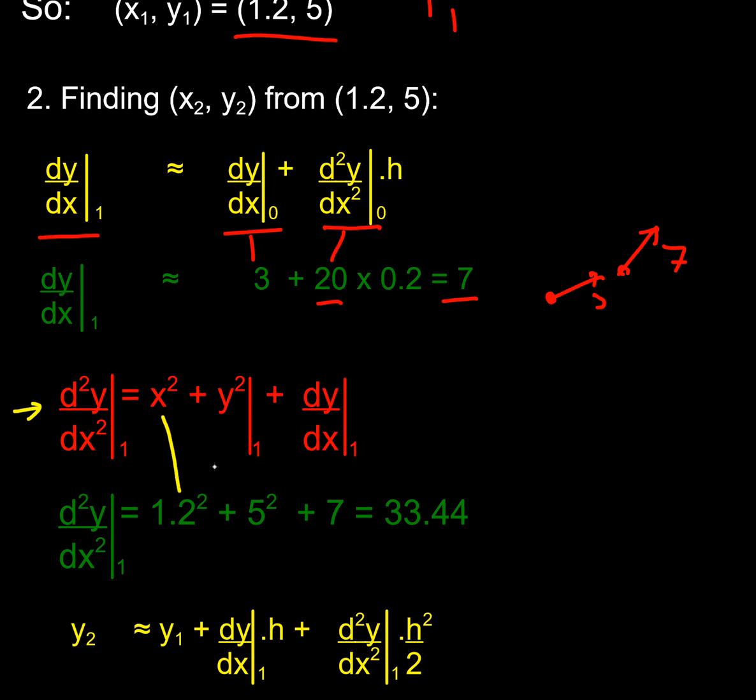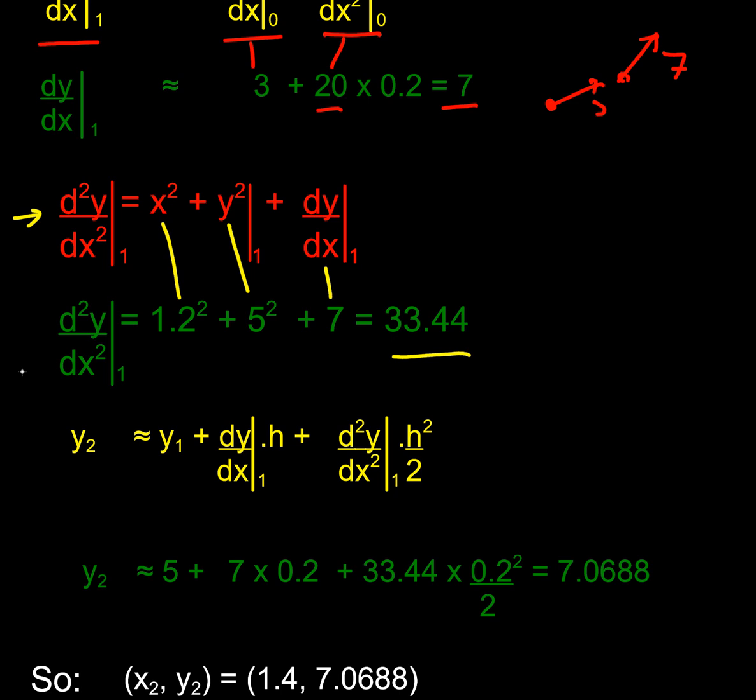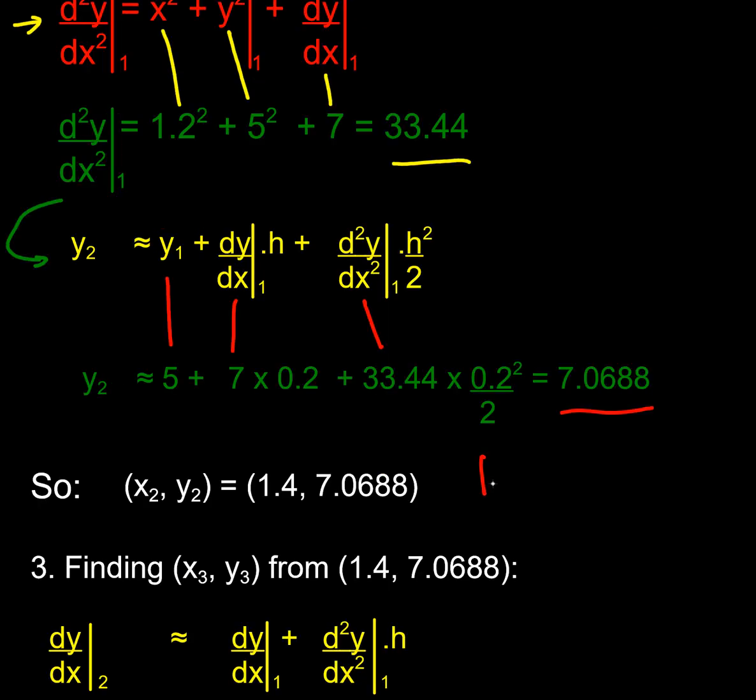Okay, so now I know that's 7, I can substitute that into my differential equation. So, I'm at P1, x equals 1.2, y equals 5, and my new approximate gradient is 7. So, I know my curvature now, my second differential is 33.44, and I'm going to substitute that in to my quadratic fit to find y_2. So, here we go, y_2, y_1 is 5, the gradient at y_1 was 7, the curvature at y_1 was 33, and using the formula, I get that y_2 is 7.0688, so there we go. I've got P2 now, here's my P2, isn't it?